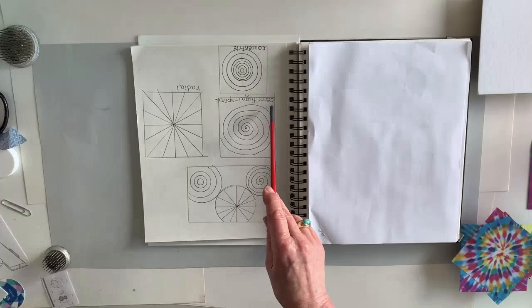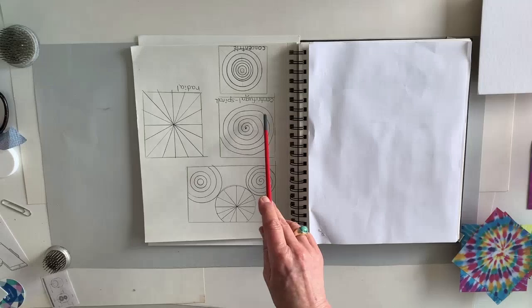The three different ideas are centrifugal, spiral, concentric, and radial.